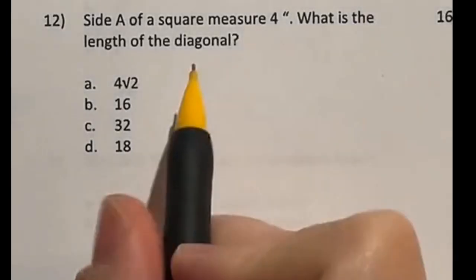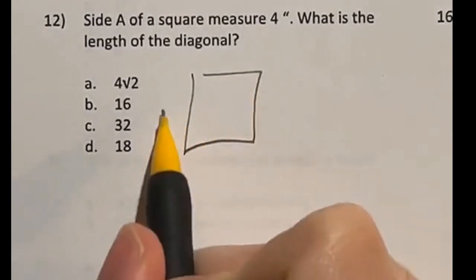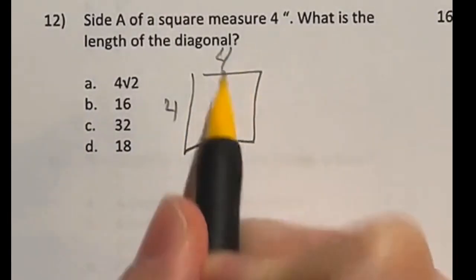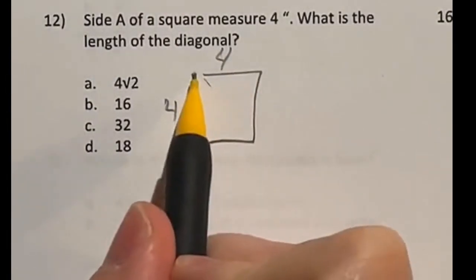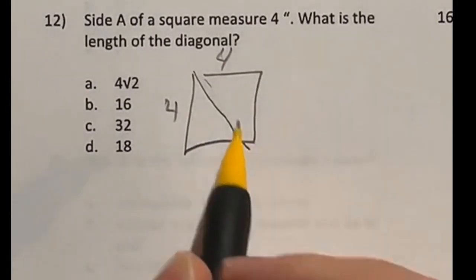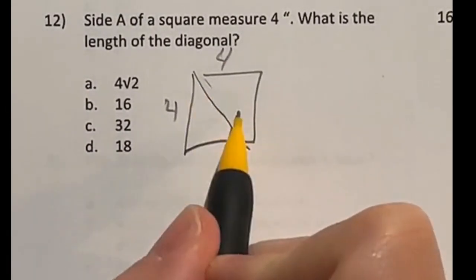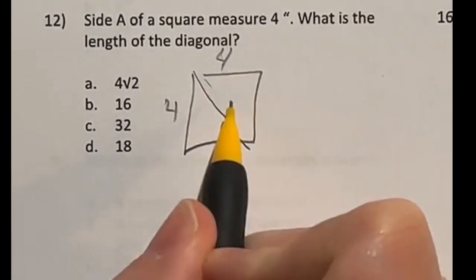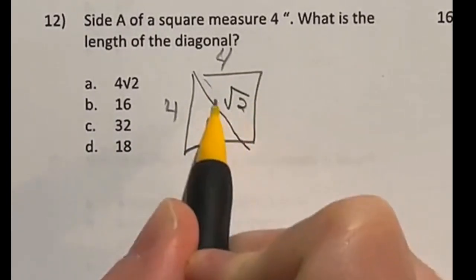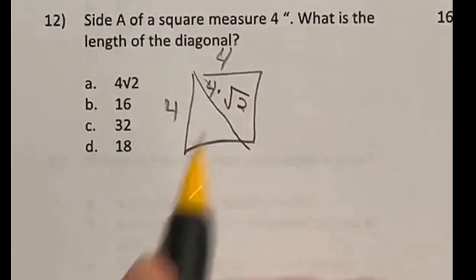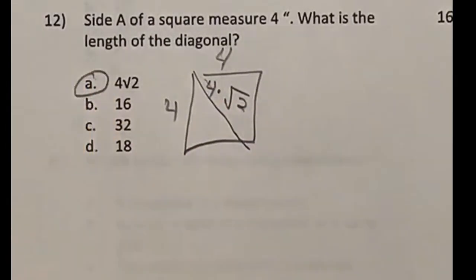So number 12 is talking about a square that has a side length of four, which means all sides on it are four. And it wants to know the length of diagonal. Well, one of the straightforward things you can know right off the bat is that in a square, the diagonal is always whatever the side length is times the square root of two. So in this case, it's going to be four times the square root of two, which is answer A.